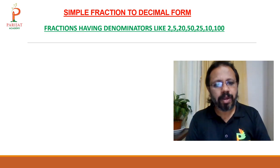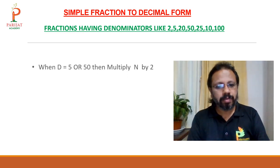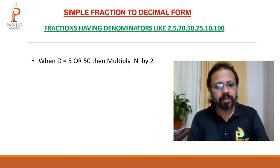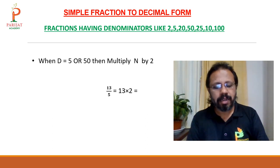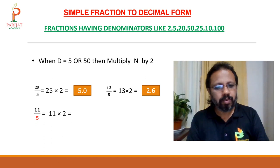When the denominator is 5 or 50, multiply the numerator by 2. For example, 13 upon 5: multiply 13 by 2 to get 26; 5 is single digit so leave the last digit — answer is 2.6. 25 upon 5: 25 times 2 is 50 — answer is 5.0. 11 upon 5: 11 times 2 is 22 — answer is 2.2.